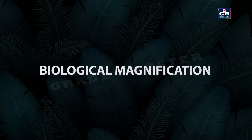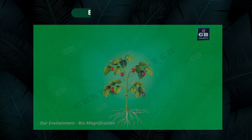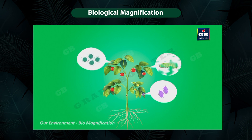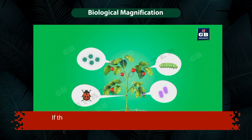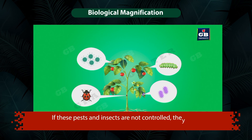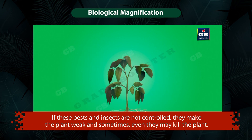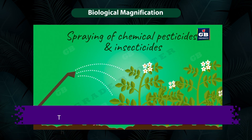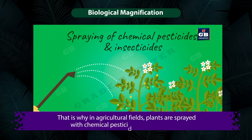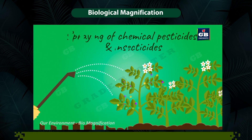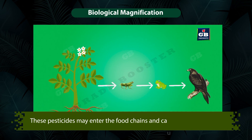Biological magnification. We all know that bacteria, viruses, and insects attack plants quite often. If these pests and insects are not controlled, they make the plants weak and sometimes even kill the plant. That is why in agricultural fields, plants are sprayed with chemical pesticides and insecticides. These pesticides may enter the food chains and cause many problems.